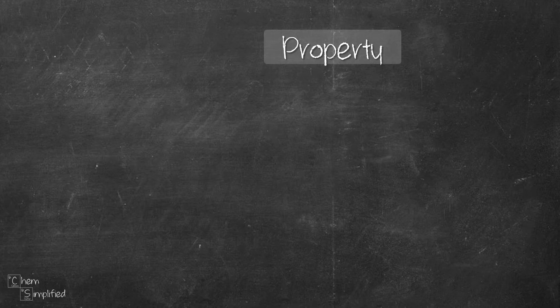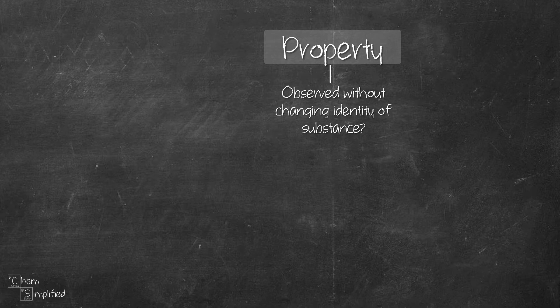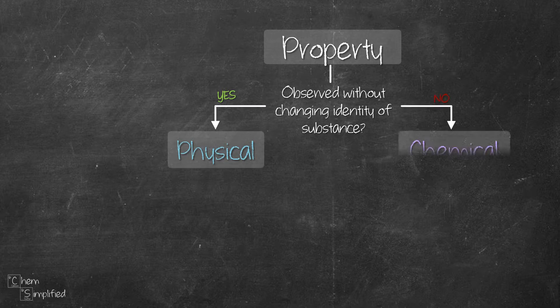To make it easier, we can classify whether a property is physical or chemical by asking a simple question: whether that property can be observed without changing the substance's identity. If yes, then it's a physical property. If no, then it's a chemical property.